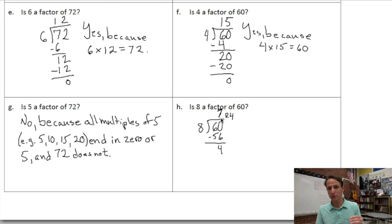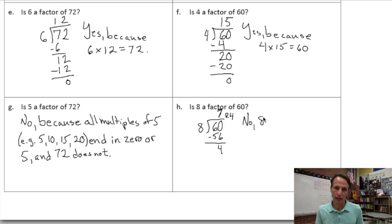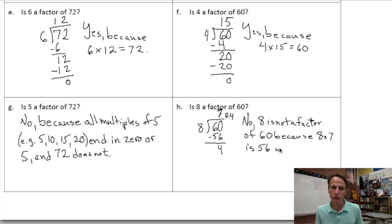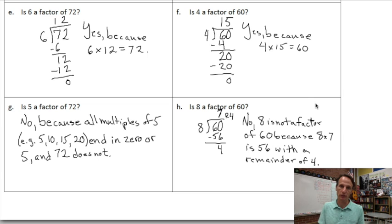Is there a number we can multiply eight by to get sixty? Is eight a factor of sixty? No, it's not. Because when we divide, we end up with a remainder. Eight is not a factor of sixty because eight times seven is fifty-six with a remainder of four, which is to say that sixty is not evenly divisible by eight.